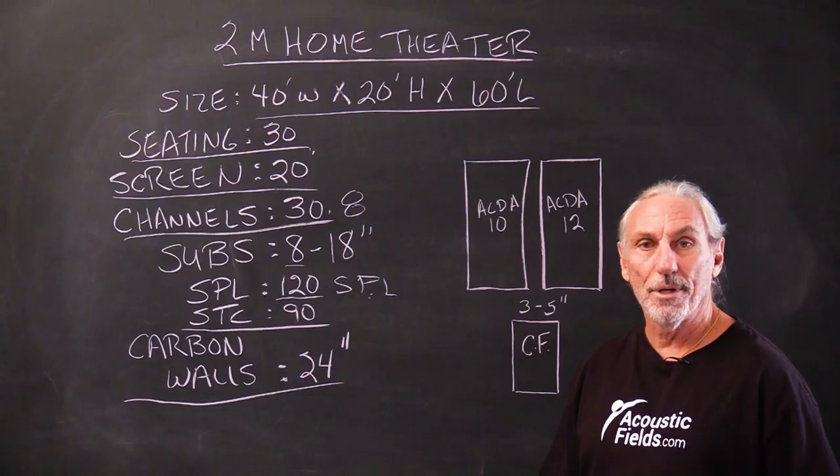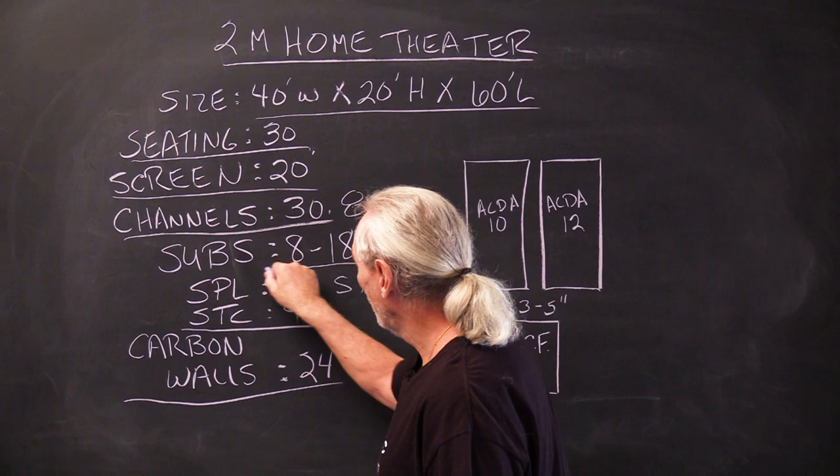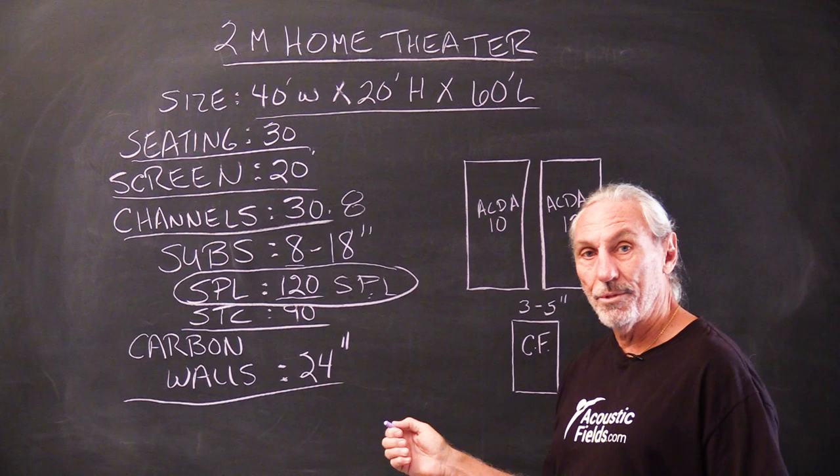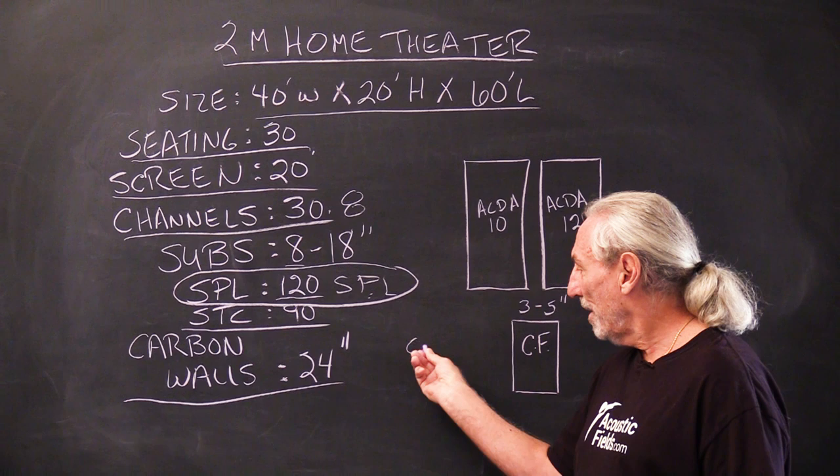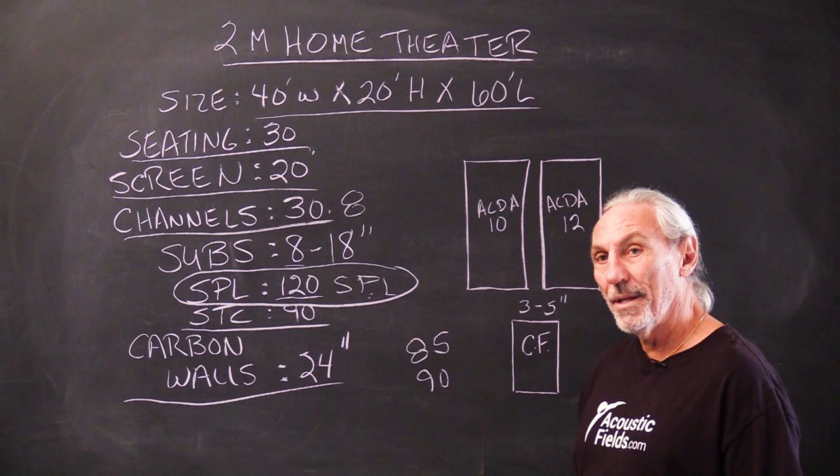But here's the big thing for us: the carbon walls. We're going to have two walls. Because we have pressure levels that are very, very high. When we design rooms, and you've all taken advantage of our design service, we target pressure levels 85, 90 in that range.